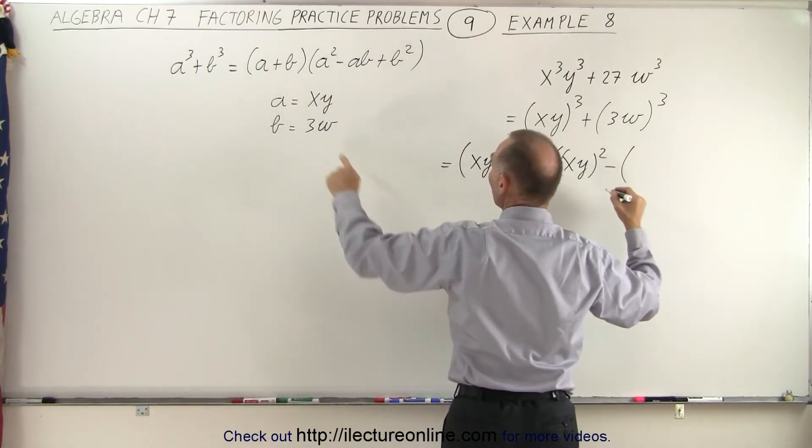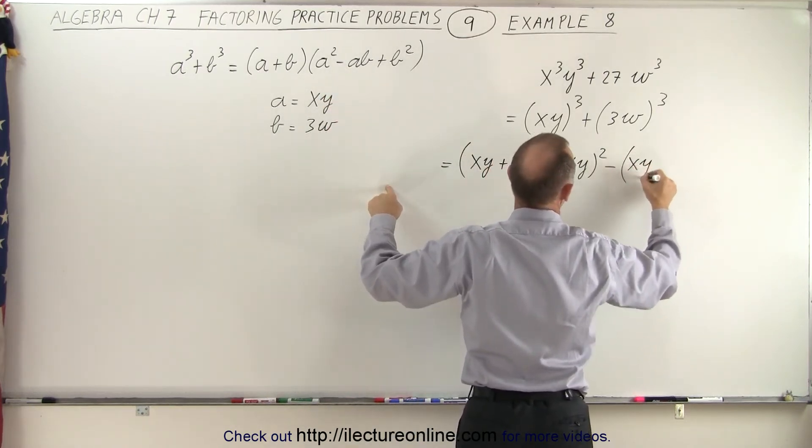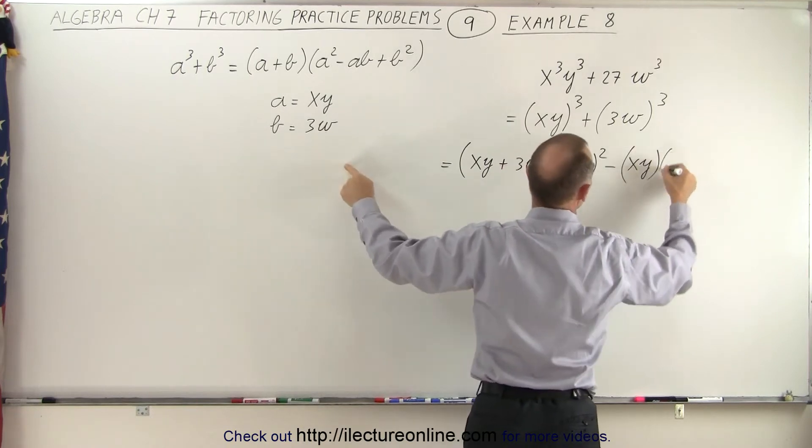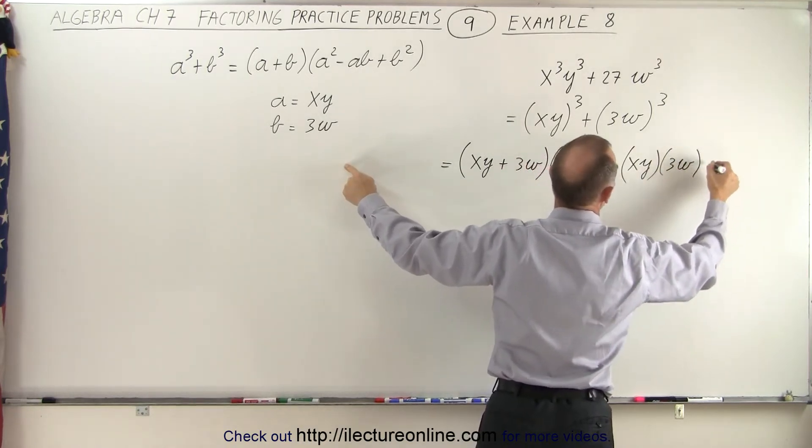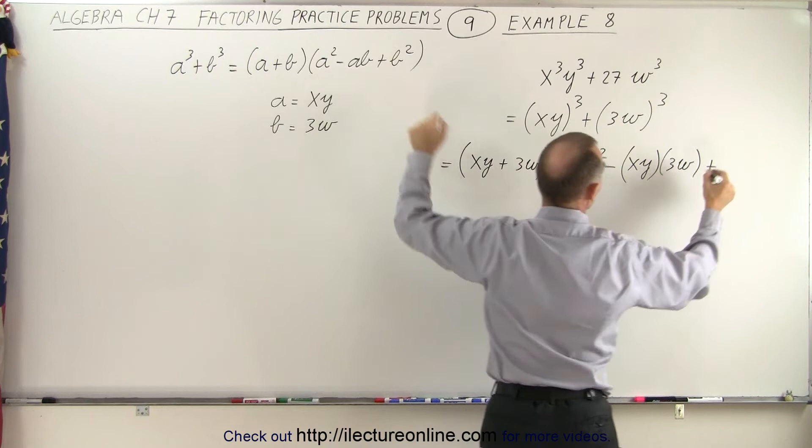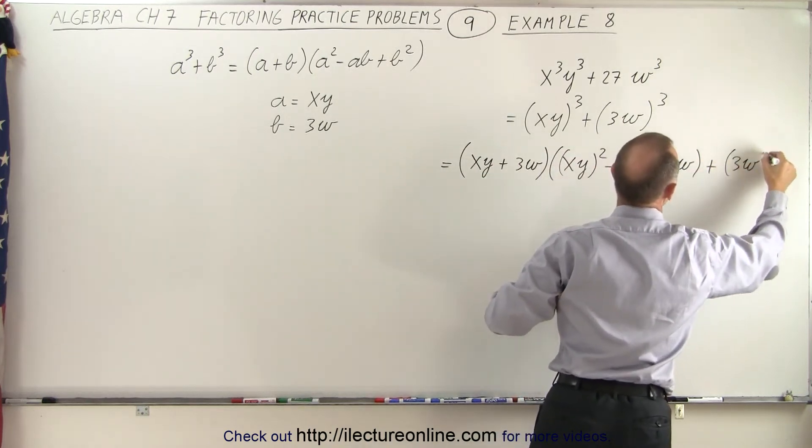because we have a minus there, ab which is xy times 3w, plus b squared, which will be 3w squared.